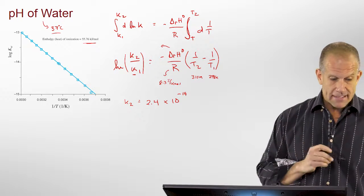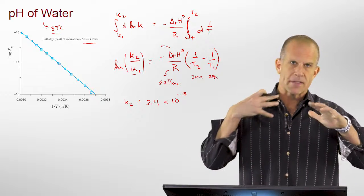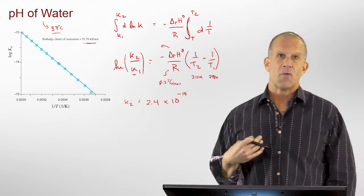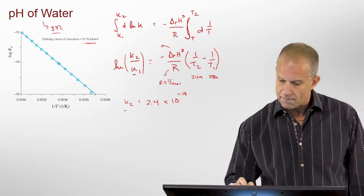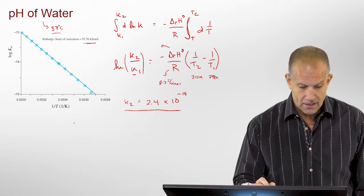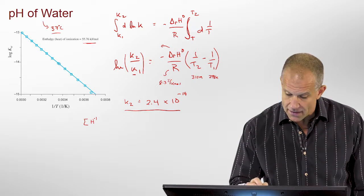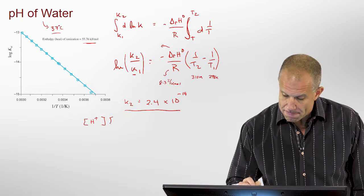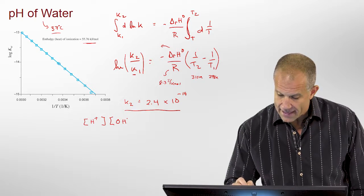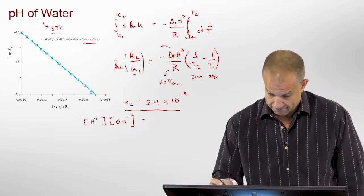And, so now, let's get this in terms of not the equilibrium, which maybe we don't, even if we put this as PK, we might not have as much of a sense for, as what the pH is. In this case, this reaction is, we know that it's the concentration of H plus and OH minus that gives this K2, this equilibrium constant K2, which we said is 2.4 times 10 to the minus 14.